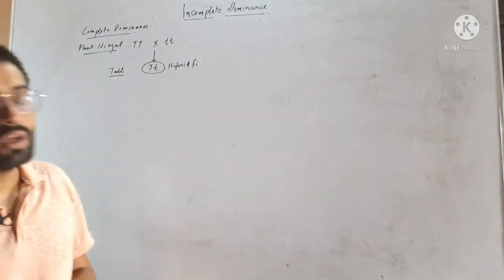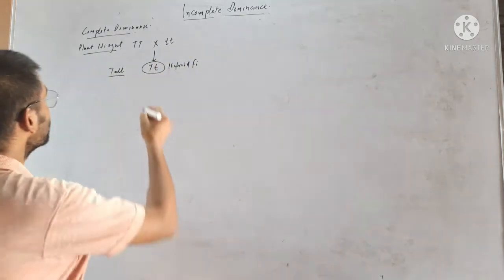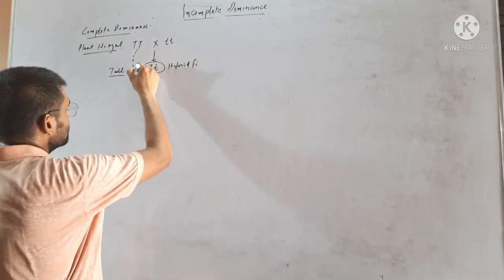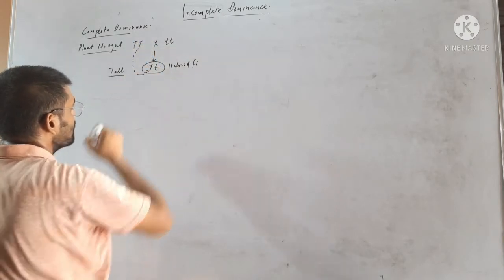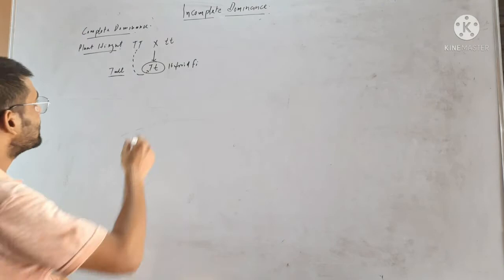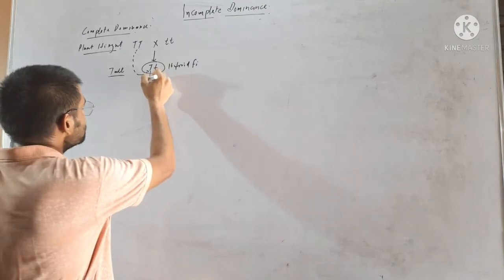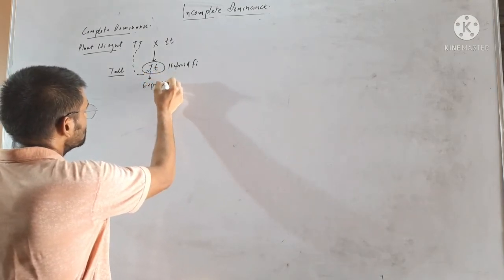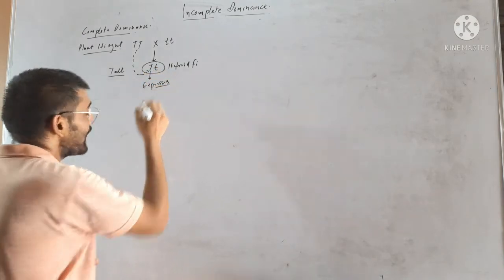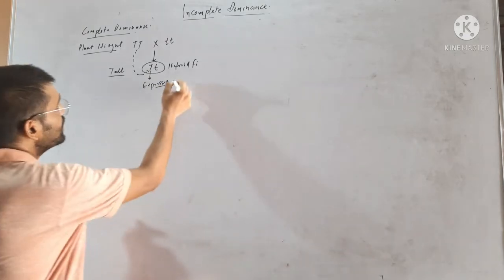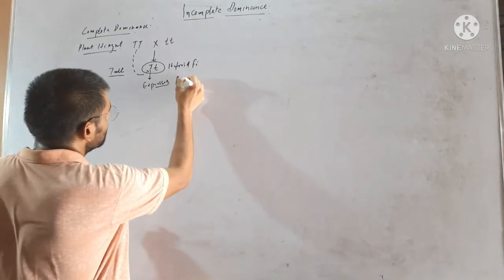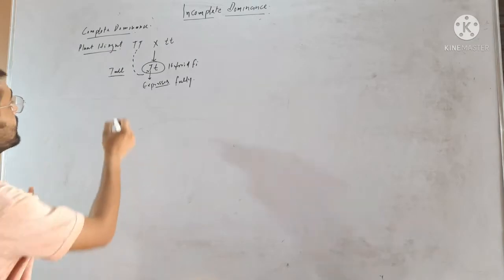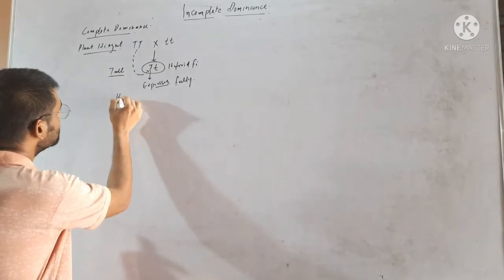Why is it tall? Because here, the capital T allele shows dominance. It expresses itself fully, even in the heterozygous condition.